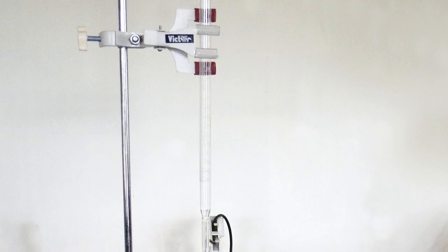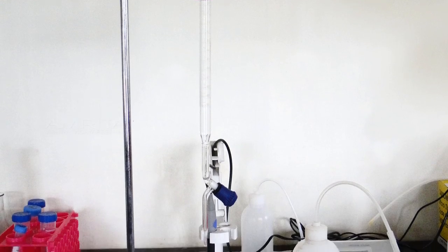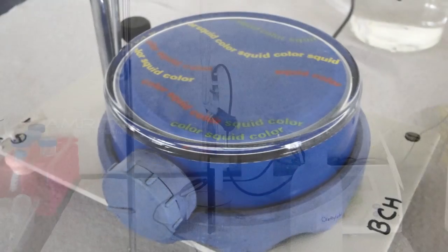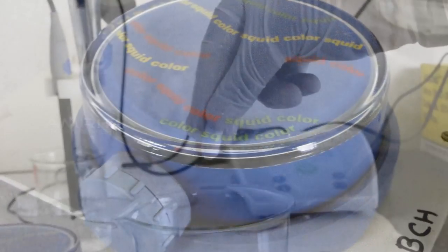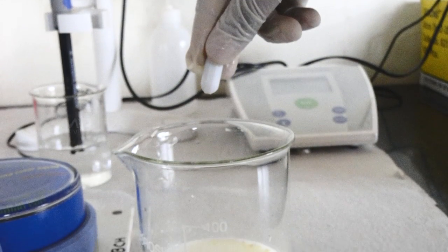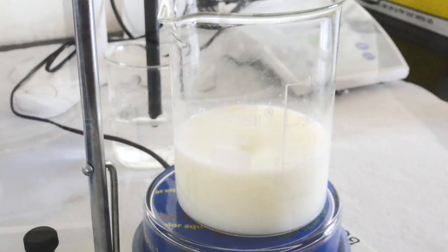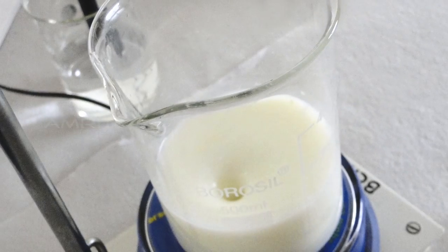Now take a 50 ml burette which will be used to add the HCl. Place a magnetic stirrer on the burette stand. Put a magnetic bar into the beaker containing the milk. Using the magnetic stirrer, stir well the contents of the beaker.